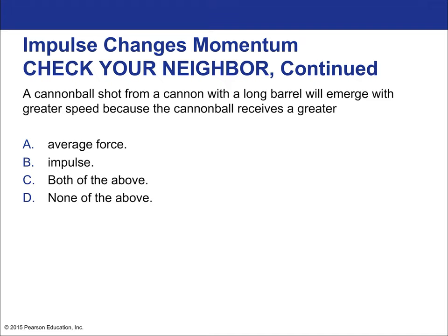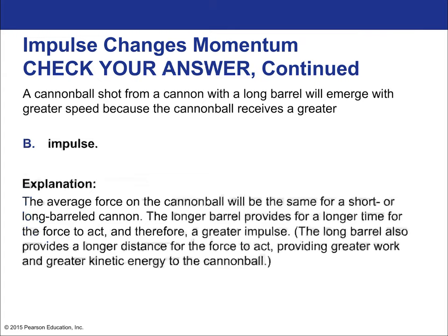A cannonball shot from a cannon with a long barrel will emerge with a greater speed because the cannonball receives a greater impulse. The average force is assumed to be constant. We can absolutely say even if the force was to decrease towards the end of the long barrel, just the fact that the barrel is longer would mean a greater total impulse because we've extended our T. We've made this one larger than with short barrel, with no necessary change to F.